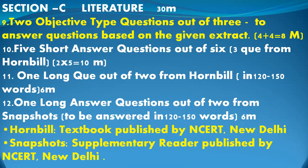Next is Section C — Literature — which will again be 30 marks. Question 9 will have two extracts: one from a poem and one from a book. You will have two extracts — one from Hornbill and one from Snapshots — each of four marks. Most students make the mistake of thinking there is an option in the four-marks question, but there is no option in question 9. You have to do both extracts — one from Hornbill and one from Snapshots — each in four marks.